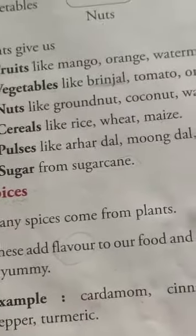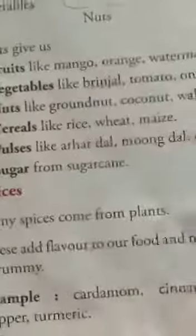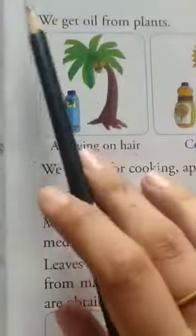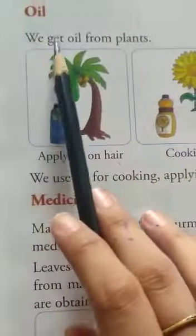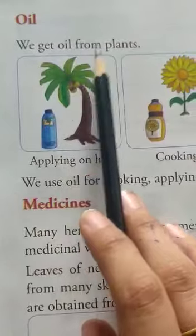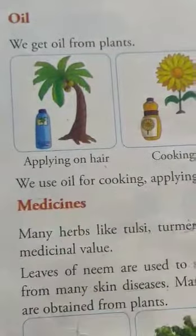These are the spices which we use in our food. Next is oil. We get oil from plants. Kya milta hai? Oil.